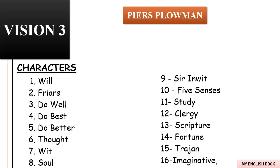In his dream within a dream, Will is tempted by a woman named Fortune and her two companions, who tempt Will into wasting several years of his life chasing pleasure. However, as Will grows old, Fortune and her companions abandon him and Will falls into poverty. During this time Will meets a new character named Trajan, a Roman emperor who was a non-Christian saved from the pits of hell by Gregory. Trajan explains to Will the value of living a moral, loving life — these qualities are what saved Trajan from hell, even though he was not a Christian during his lifetime.